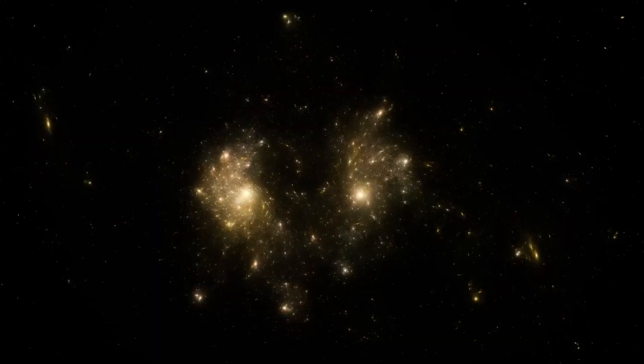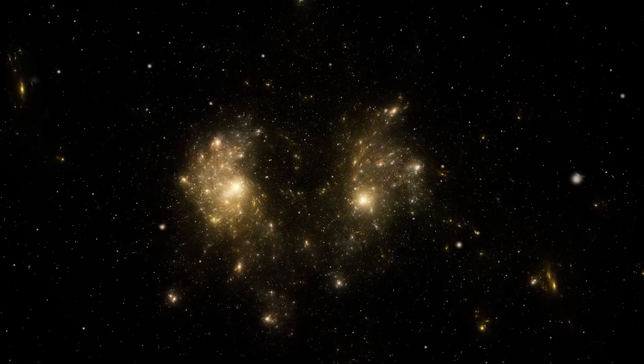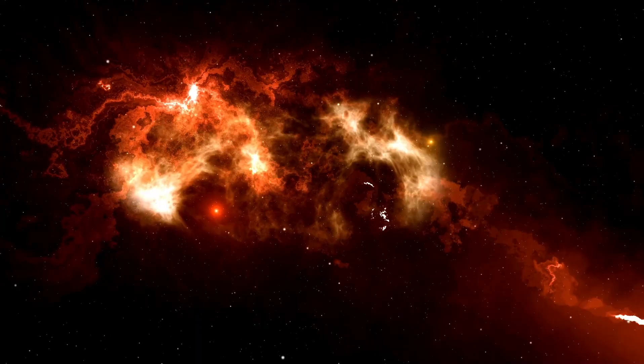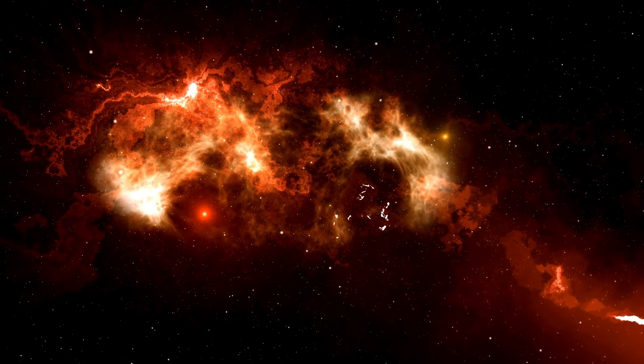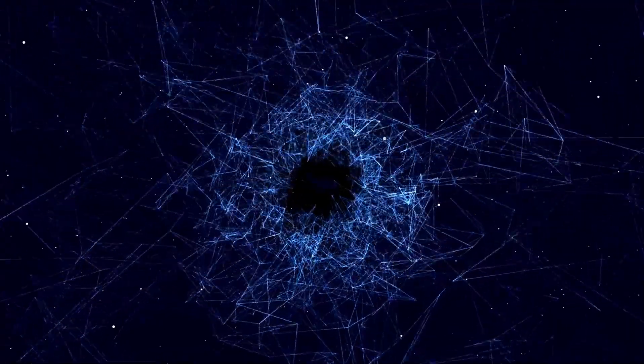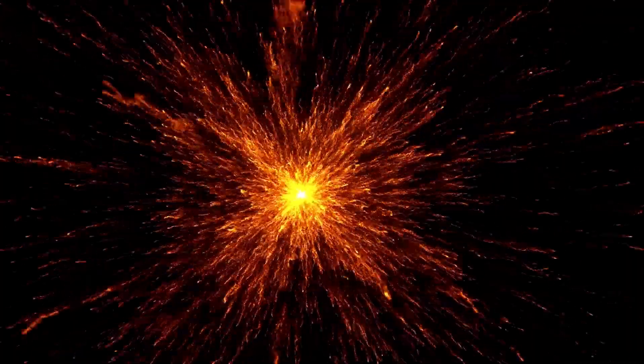This presents severe challenges to existing astrophysical models. But the shocks are not over yet. Webb's ultra-deep field exposures show us that these old galaxies are not spaced at random—they are embedded in a fragile, interconnected web, an early incarnation of the cosmic web. This cosmic web is a huge structure composed of filaments and voids of galaxies and dark matter that gives the universe its large-scale design. Scientists believed such structures took billions of years to evolve, yet Webb shows that the seeds of this cosmic scaffolding were already germinating in the universe's infancy. This forces a re-evaluation of our simulations of the early universe and suggests that gravitational clustering and dark matter may have worked in ways we're only beginning to grasp.